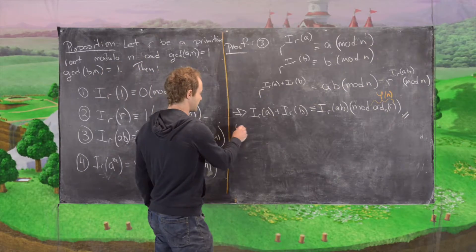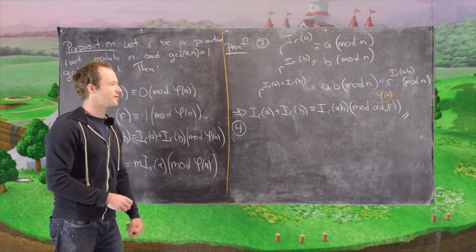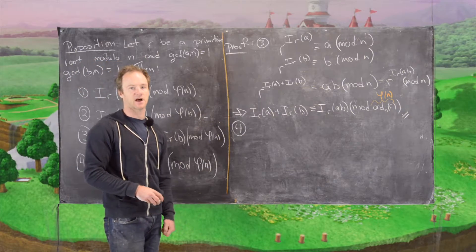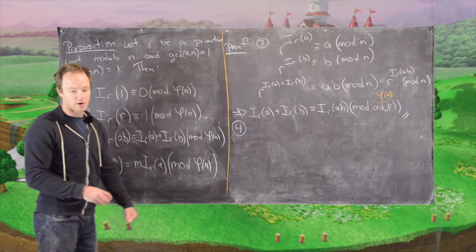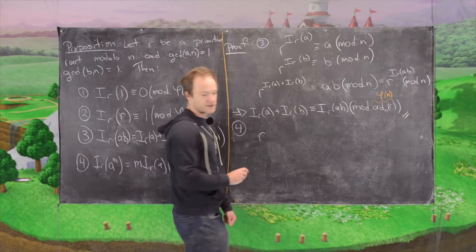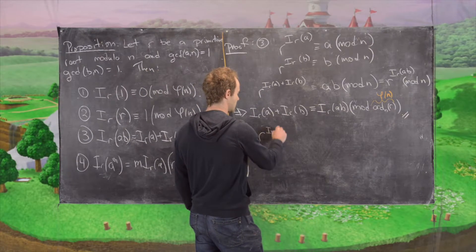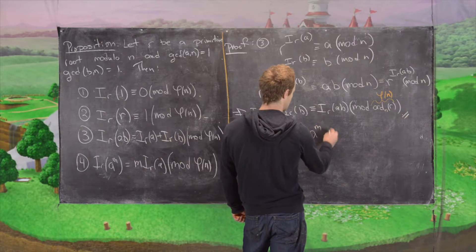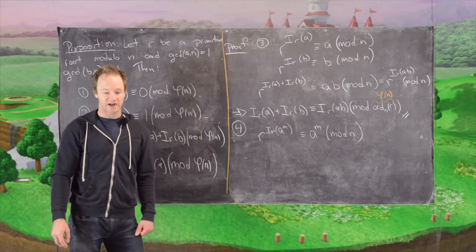And so now let's look at part four. We're going to do a pretty similar thing. This looks like the proof of the logarithm rule for real numbers, except at the very end we apply this previous result. What we'll do is say r to the power of the index of r of a to the m is congruent to a to the m mod n. That's maybe fact number one.